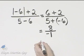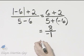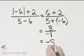Then we can simplify further. 8 divided by negative 1 is negative 8.